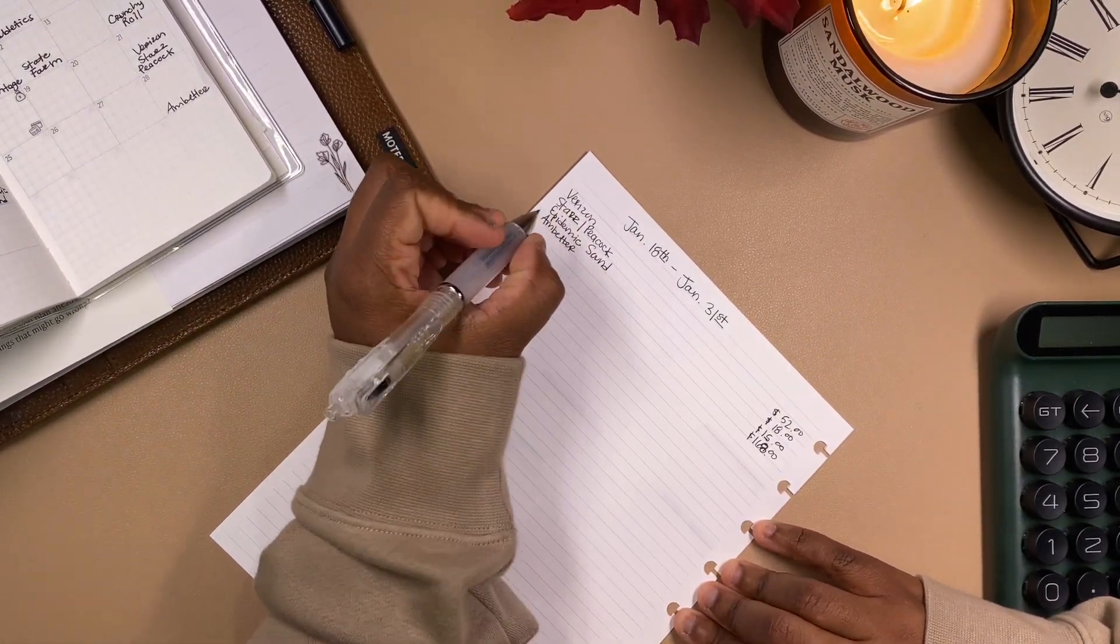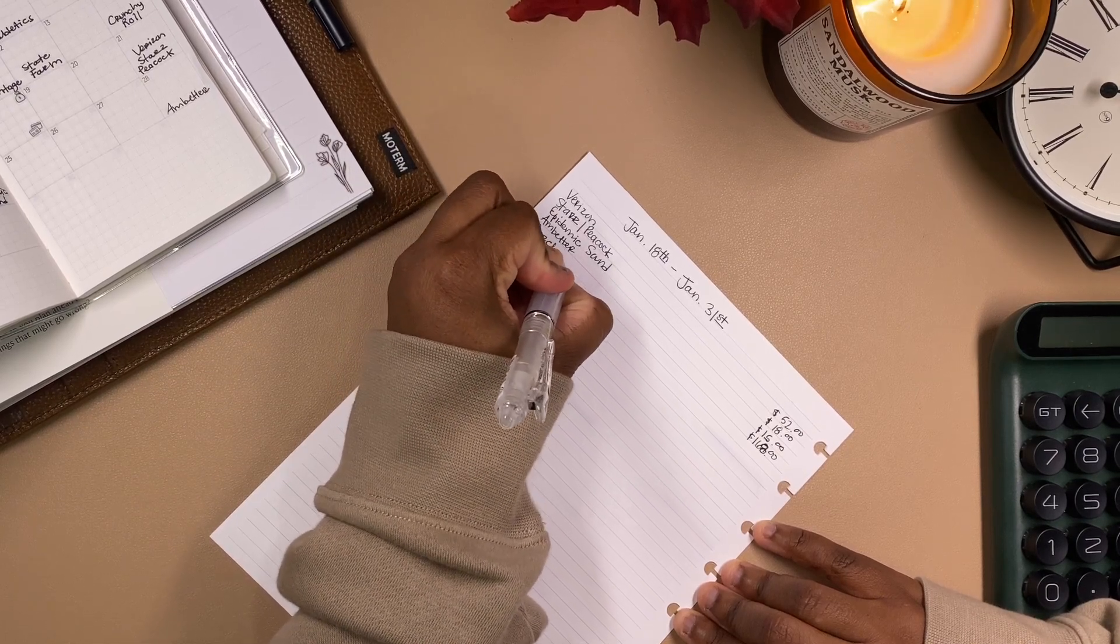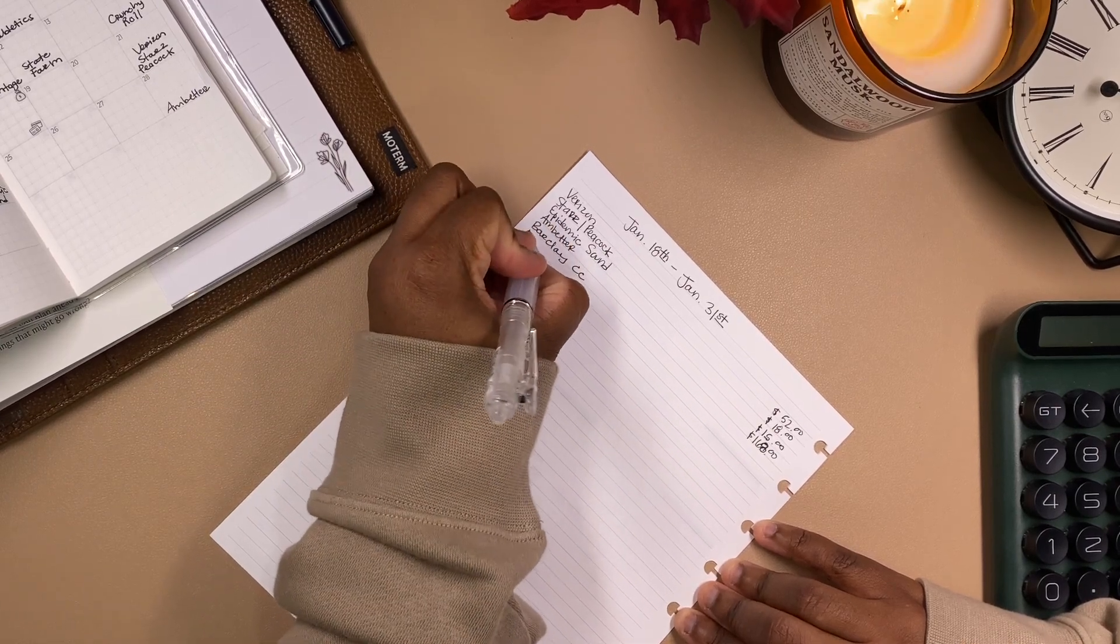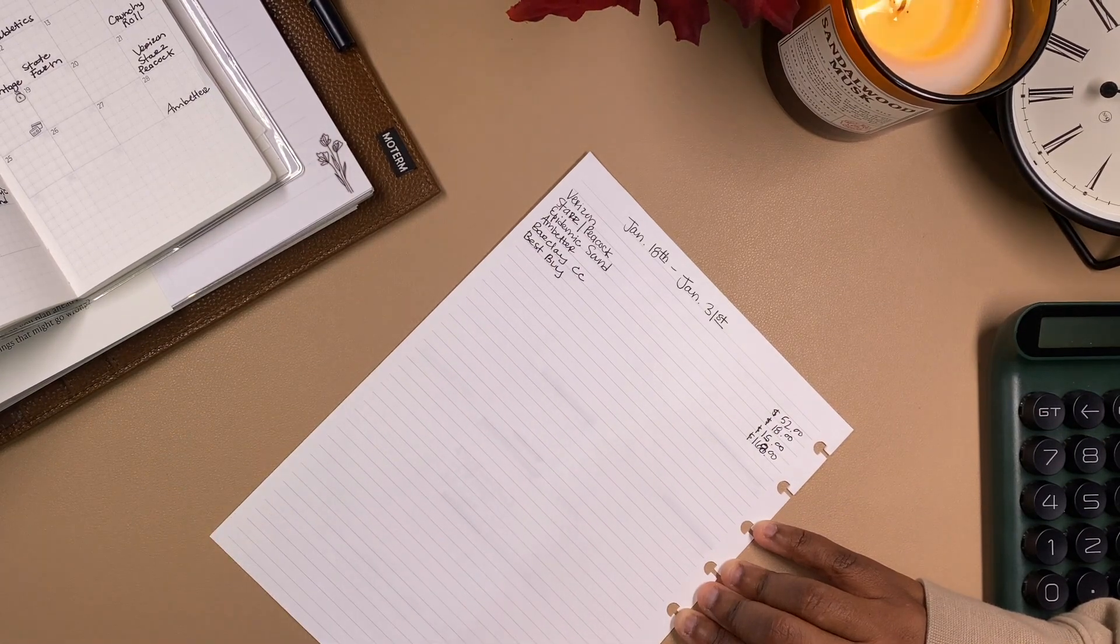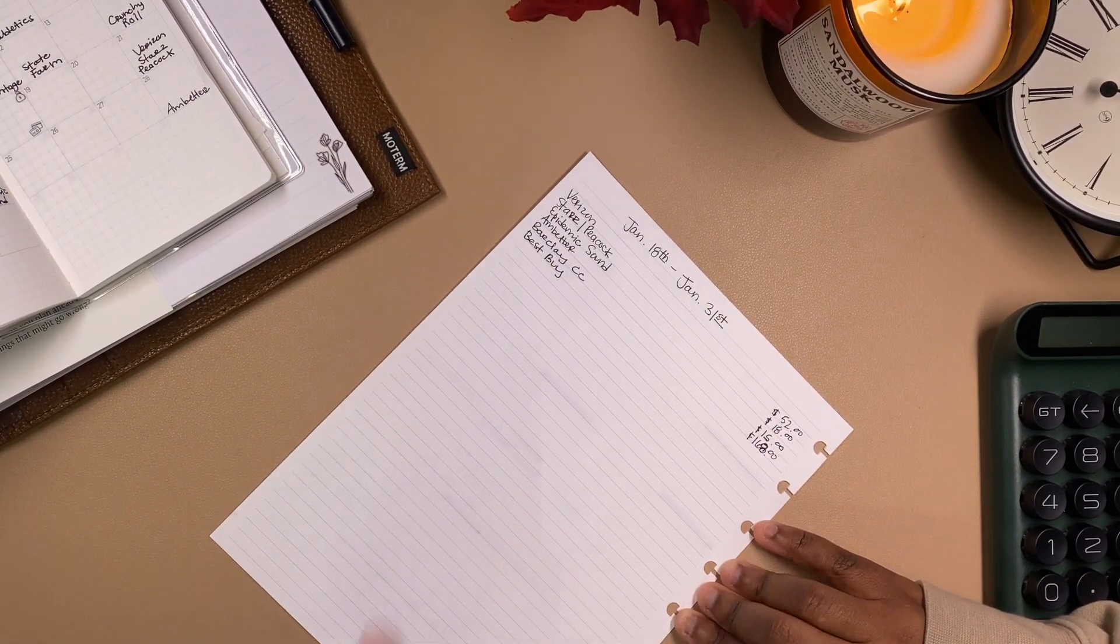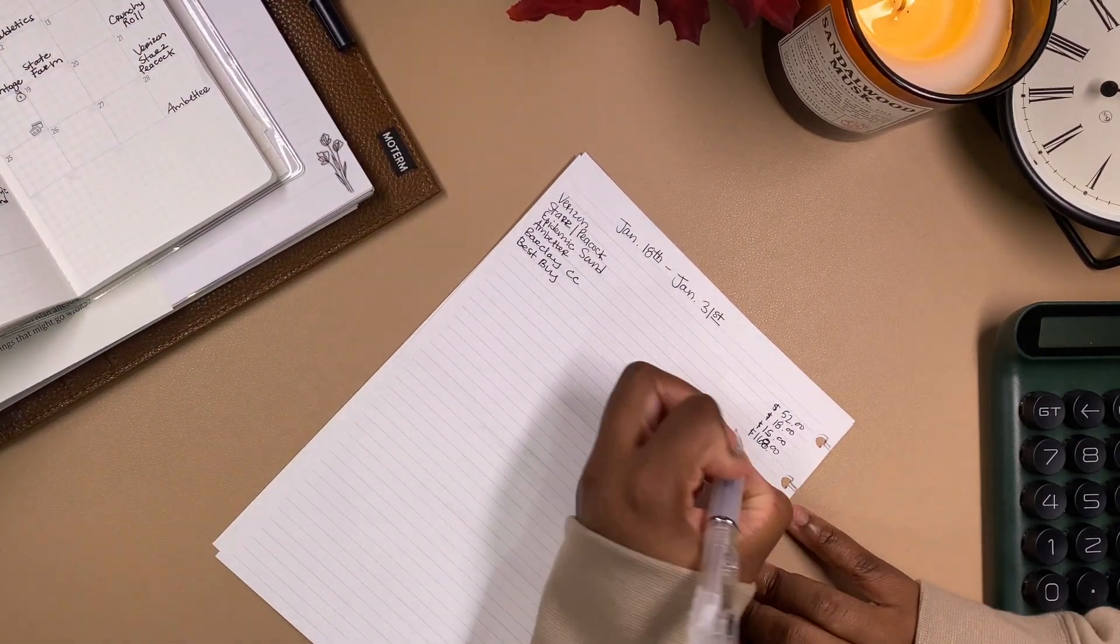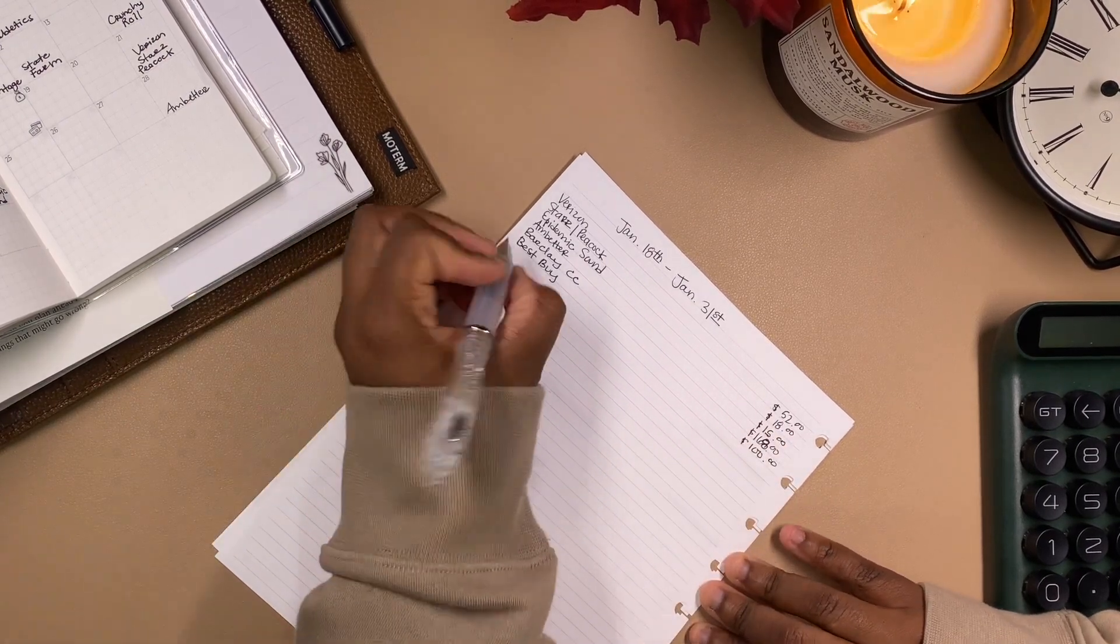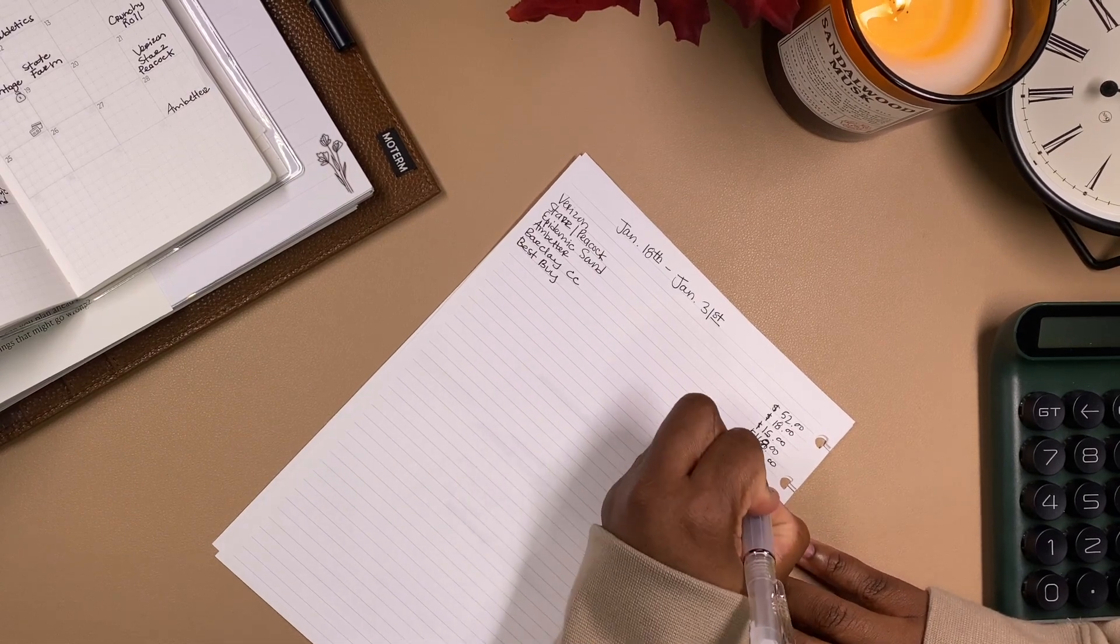I can't remember. I think Epidemic Sound also went up, but I can't check right now. Let's see what else. So Epidemic Sound is... I think it also went up, but I'm just gonna put $15 for now. And then Ambetter, which is my health insurance, that comes out on the 28th and it's about $168. Sorry, my writing is all over the place today.